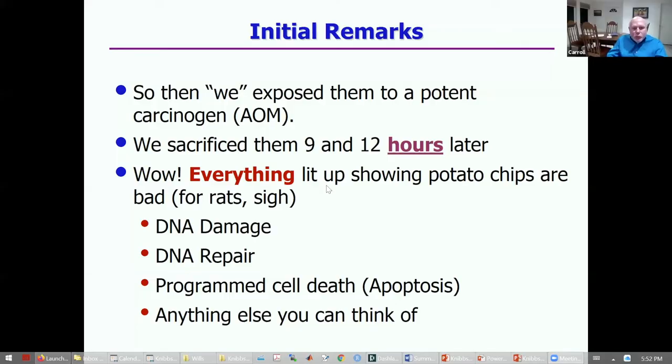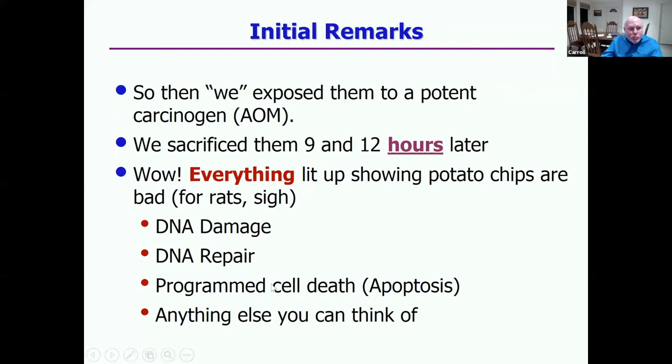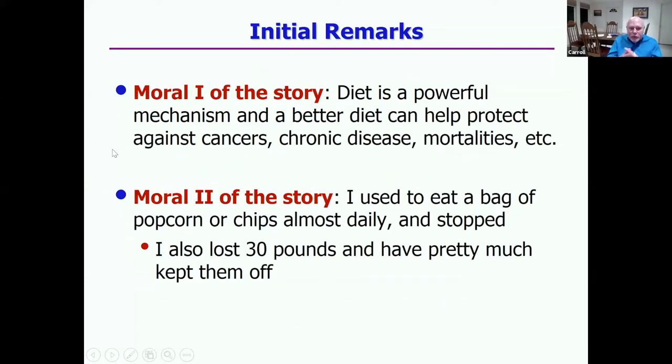Years later, we showed that there were 3,000 genes that were statistically significantly different in terms of mRNA expression with a false discovery rate of 0.05 — a pretty impressive finding. The nutritionists then exposed the rats to a potent carcinogen called AOM and sacrificed them nine and twelve hours later. What was so astonishing was that everything lit up — anything you could measure showed a statistically significant difference between the potato chip diet and the fish oil diet. This made me change my diet. I got fascinated with diet and nutrition, and that's why I'm a member of the Department of Nutrition.